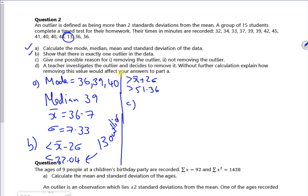So C says, give one possible reason for removing it and one for not removing it. So the reason for removing it is that it's wrong. It might have been, should be 31 maybe, got the numbers the wrong way around. And one possibility for not removing it is it's an actual correct data. That makes sense.